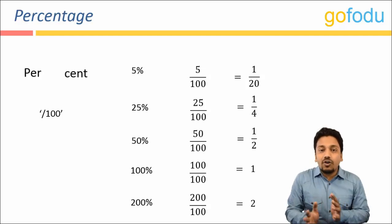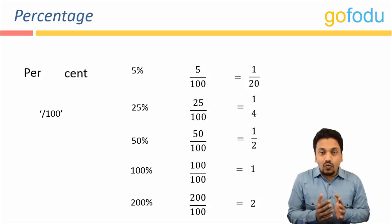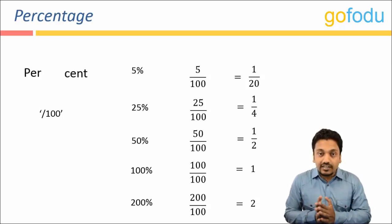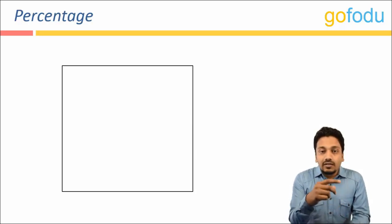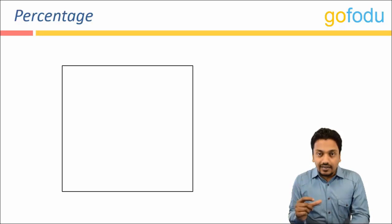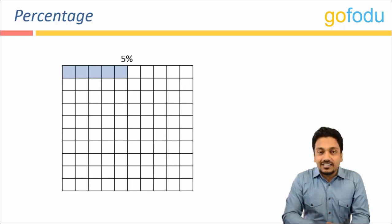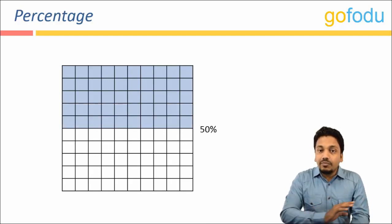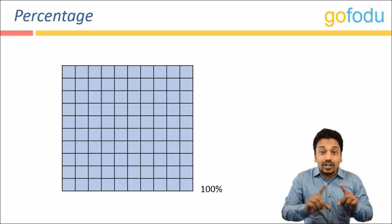Now that was the straightforward definition of percentages. Let us move on to the interpretation part. Percent simply means parts out of whole, and that whole is often considered to be equal to hundred. Suppose I have a cake and I say I ate five percent of this cake — five percent means five parts out of hundred. So if I divide this cake into hundred equal parts, five percent simply means five of those equal parts. Similarly, twenty percent and fifty percent represent increasing shaded regions, and hundred percent means one full cake.